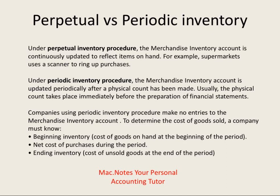Before we go any further, we have to talk about two different types of inventory systems. There's the perpetual ongoing inventory, where the merchandise account is updated all the time. Every time I buy, I debit the merchandise inventory account; when I sell, I credit it. Many companies use this system because they have scanners and barcodes — when they buy inventory they scan it, and when they sell inventory they scan it, keeping an accurate record.